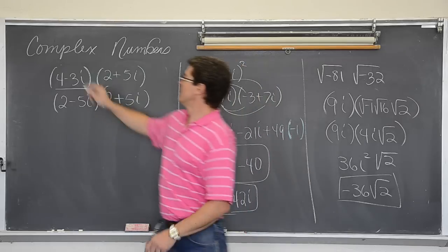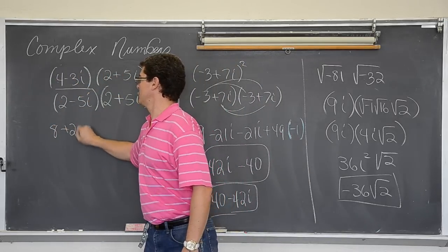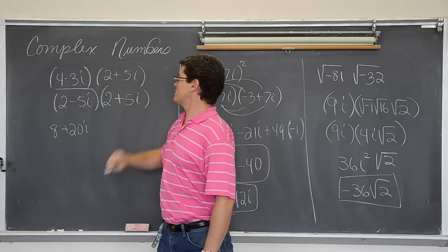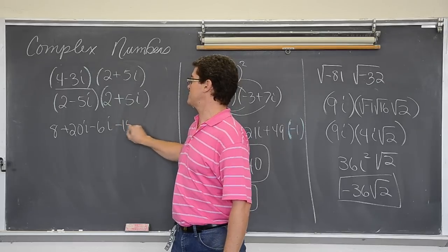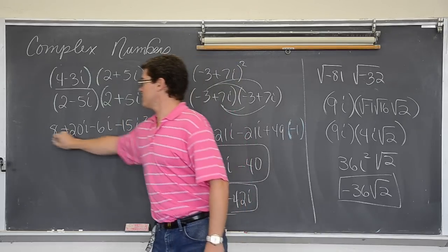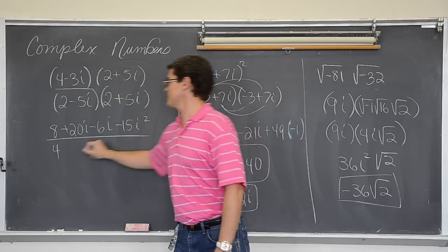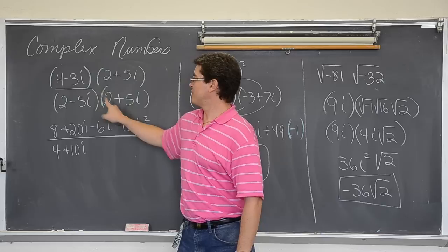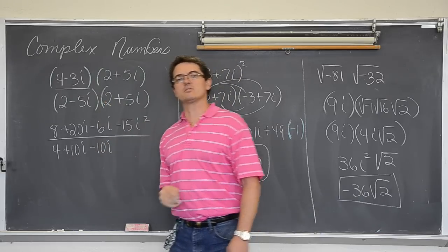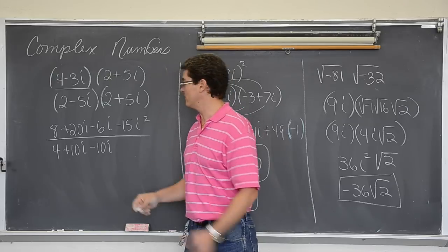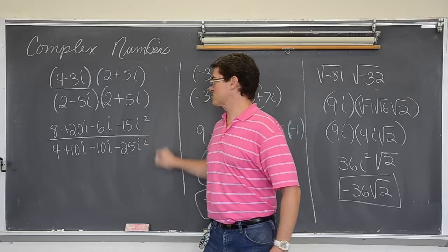So we are going to get 4 times 2 is 8. 4 times 5 is positive 20. Negative 3 and 2 is negative 6i. Negative 3 and positive 5 is negative 15i squared all over 2 times 2 is 4. 2 times positive 5 is positive 10i. Negative 5 and 2 is negative 10i. You might not need to show this work because you know the middle term is going to cancel out. But, you know, I am teaching so I have to. And negative 5 and positive 5 is negative 25i squared.